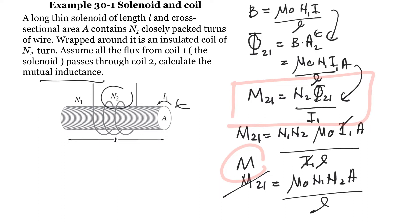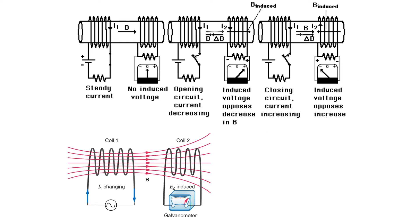Now we will practice finding the direction of induced EMF. For the first picture, the current produces a steady current — there is no changing magnetic flux, so there is no induced EMF. That is the reason why you get no induced voltage.